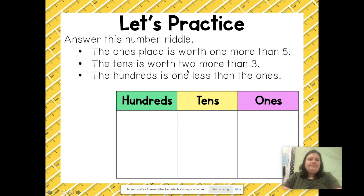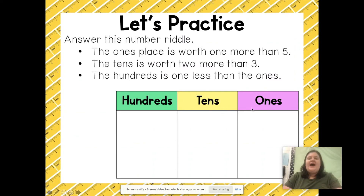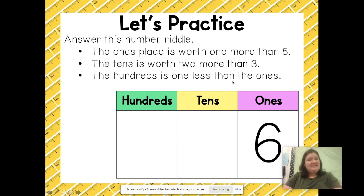Let's do another one. The ones place is worth one more than five — so that's six. The tens is worth two more than three — three plus two equals five.